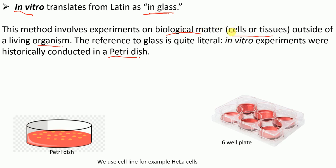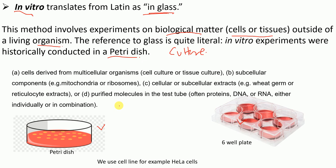In vitro experiments are conducted outside of a living organism, performed on biological matter such as cells or tissues, usually in a culture environment. We culture the cells in petri dishes or different kinds of well plates. So in vitro experiments take place outside the body of a living organism.